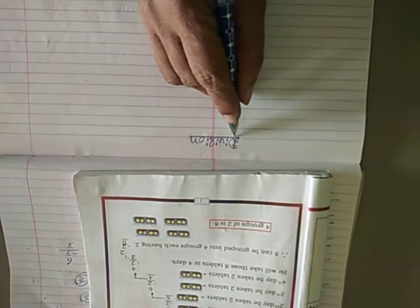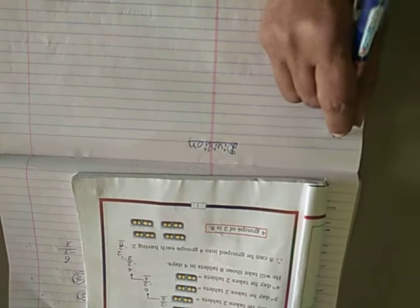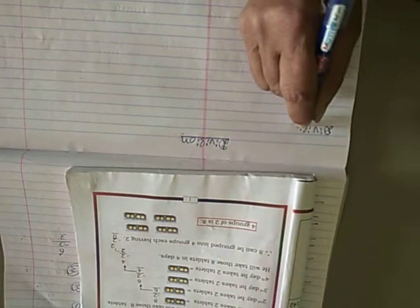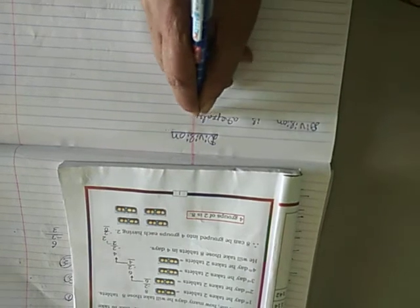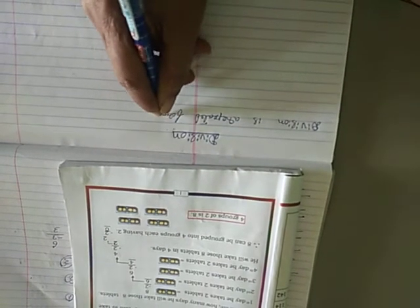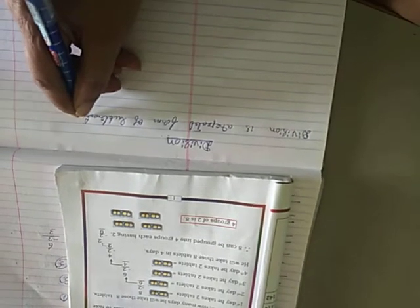Good morning children. Let us start a new lesson, Division. Division means what? Division is a repeated form of subtraction of the same number.